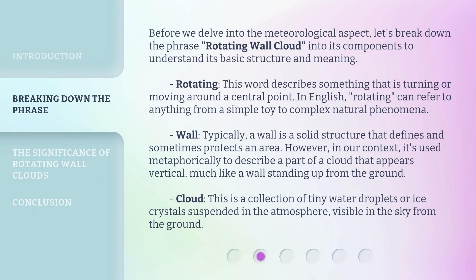Before we delve into the meteorological aspect, let's break down the phrase 'rotating wall cloud' into its components to understand its basic structure and meaning. Rotating — this word describes something that is turning or moving around a central point. In English, rotating can refer to anything from a simple toy to complex natural phenomena.